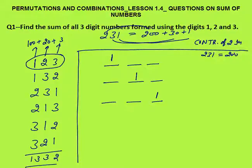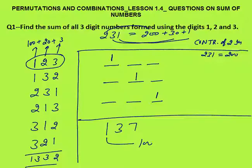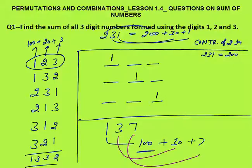Why is the contribution of 2 equal to 200? Because its place is the hundreds place. Same way, if 1 comes at the hundreds place — like in 137 — the contribution of 1 is 100. The contribution of 3 is 30 and 7 is 7.